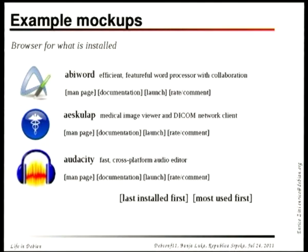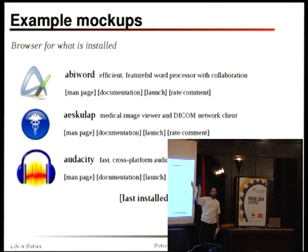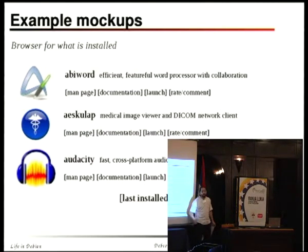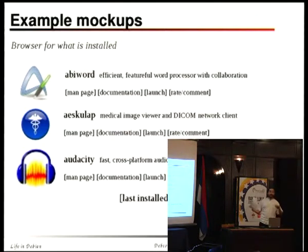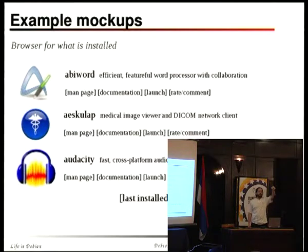Or you can have a browser for the packages already installed, showing what's in your system. You can sort by showing first the last packages you installed, so you can install things and then check what you installed and try them. Show first the packages you use the most. You can have links to man page documentation in /usr/share/doc, something to launch all the binaries provided by a package, and maybe something to contribute ratings and comments to Debian so they can be shown in application installers. We don't have anything to browse the power of an installed Debian system — except the old KDE menu, which is just a huge menu of things.